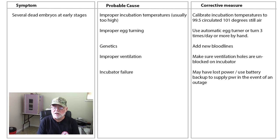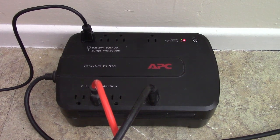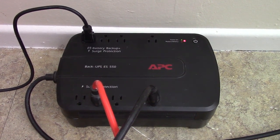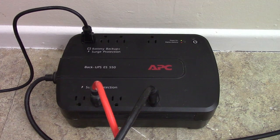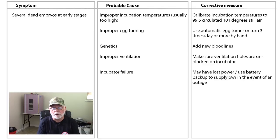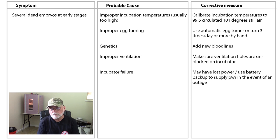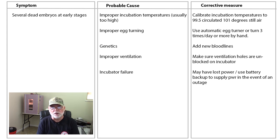What I do is keep my incubators on a battery backup system so that if power goes out for a little bit, the incubator will continue running until the power comes back on. It'll also protect your regulators from any power surges that come through the line. Basically, calibrate your thermometers and verify that your incubator is at the temperature it's supposed to be at.